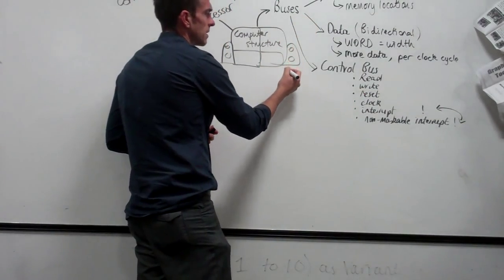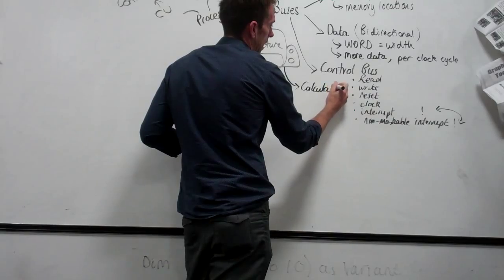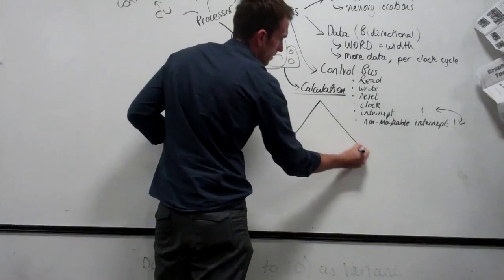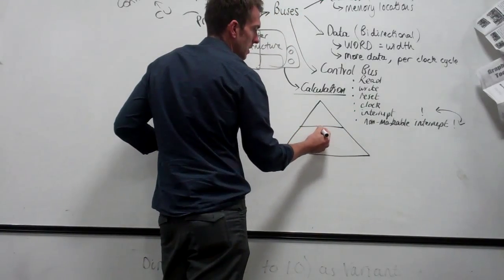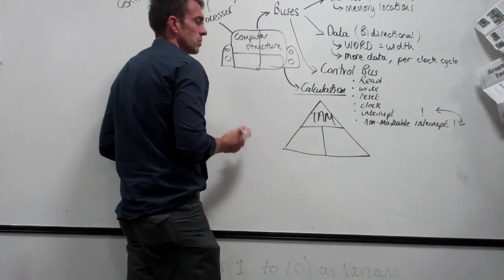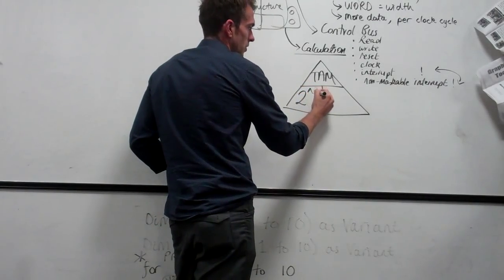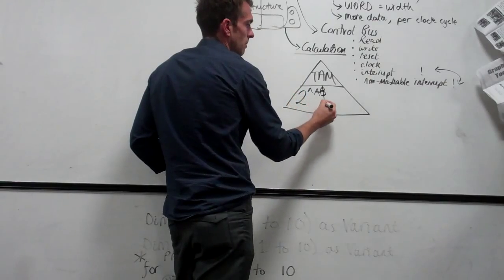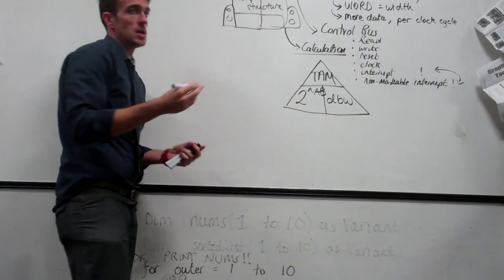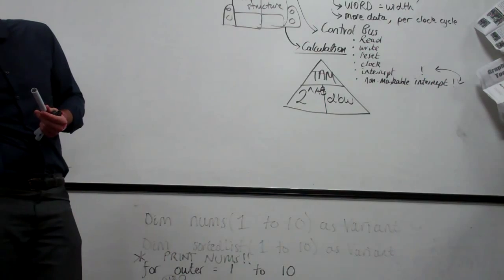After we did the data bus and the address bus, we looked at a new calculation for three marks: TAM — total addressable memory. To calculate TAM, we used the triangle you see for speed equals distance over time. Two to the power of the address bus width, multiplied by the data bus width — aka the word size.